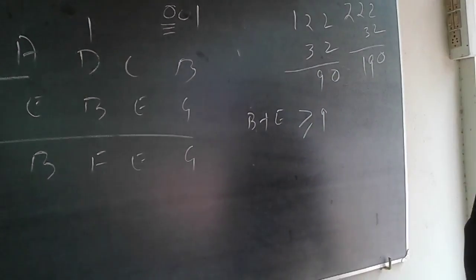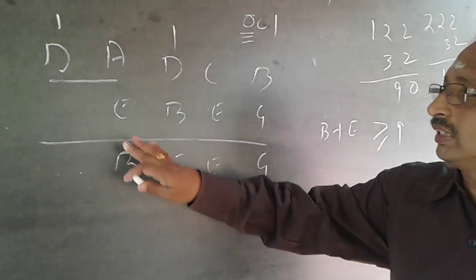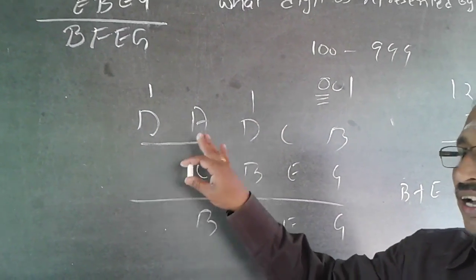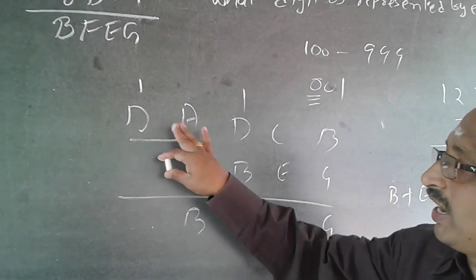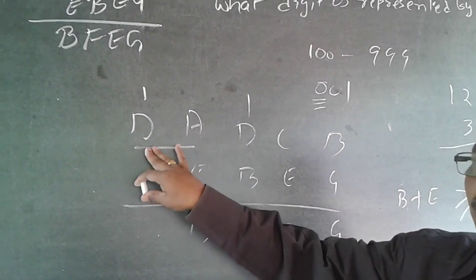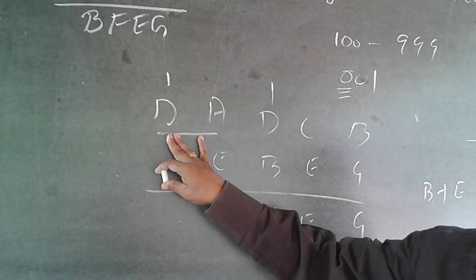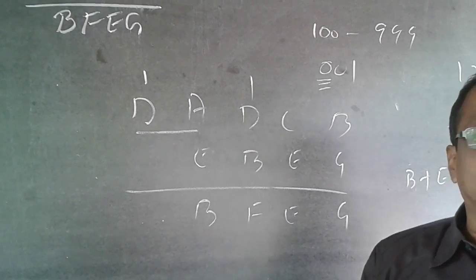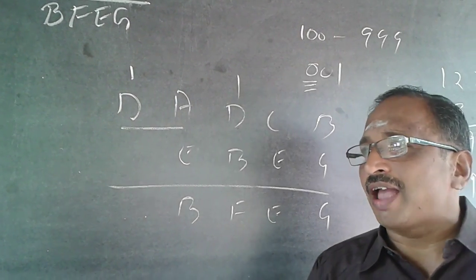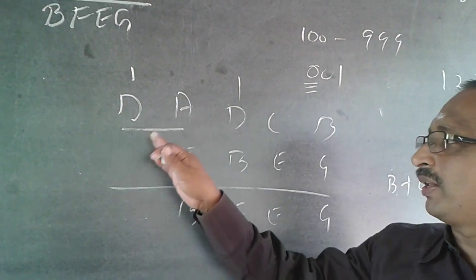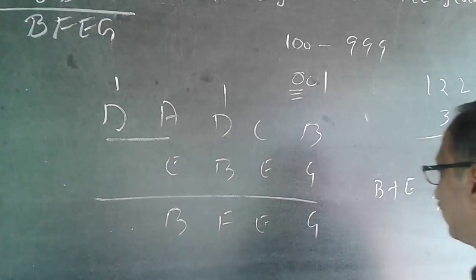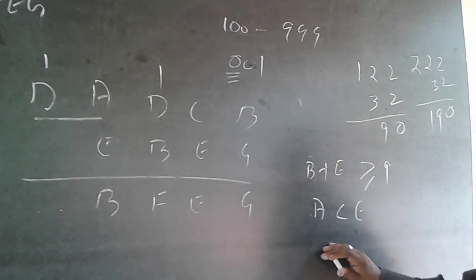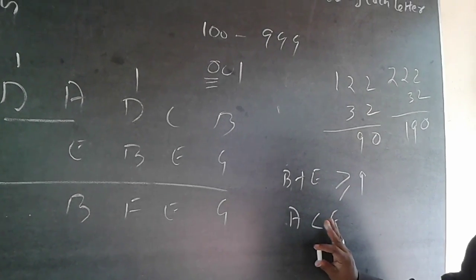One more equation is possible. Because D is vanishing, A is definitely borrowing from D. Why should A borrow from D? The only reason is that A is less than E — so this gives us another equation: A is less than E.